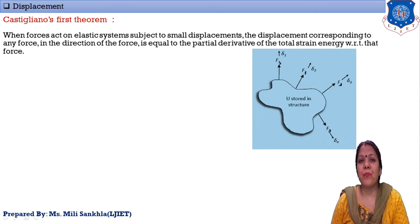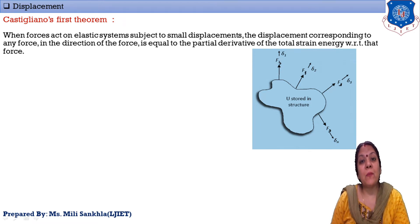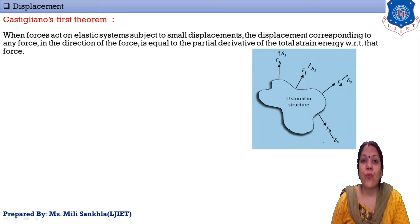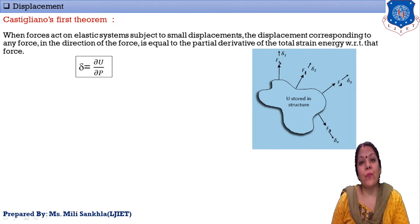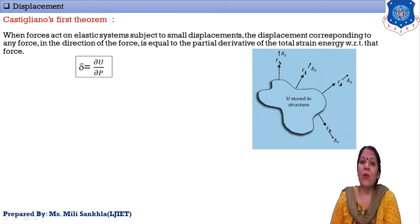The statement of Castigliano's First Theorem: when forces act on an elastic system, displacement will occur in the direction of the forces. The value of this displacement, delta, is equal to the partial derivative of strain energy with respect to the applied load. That is, deflection equals partial derivative of strain energy with respect to force P.